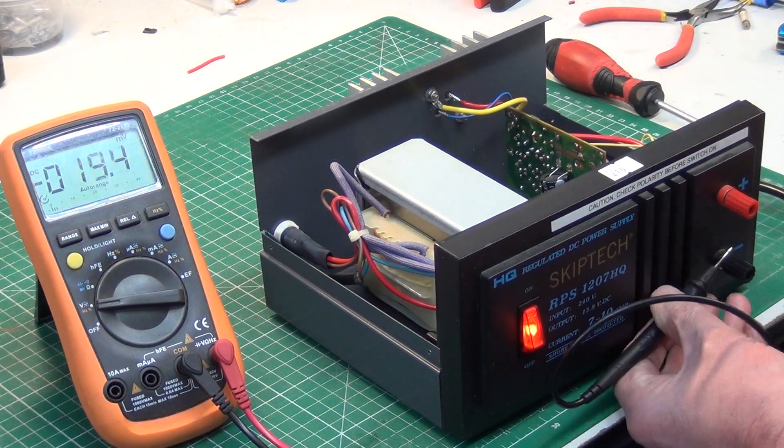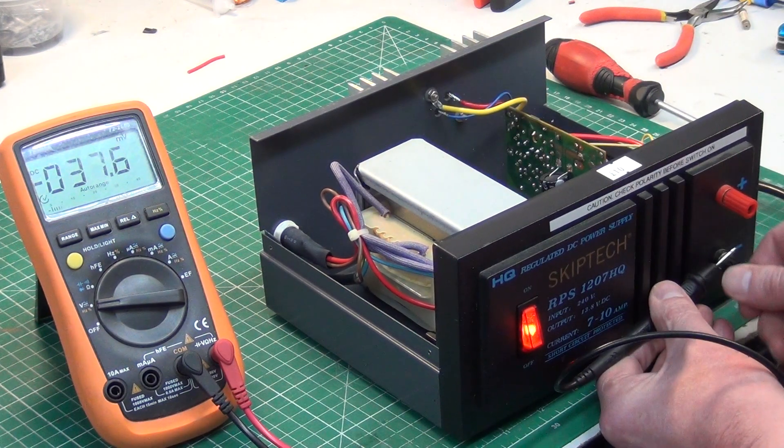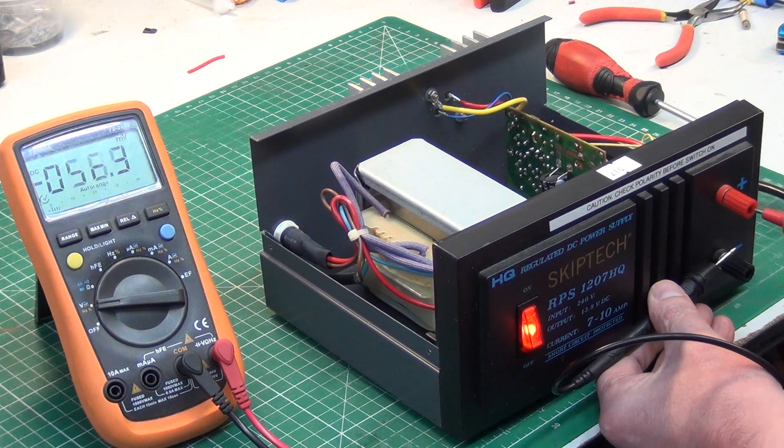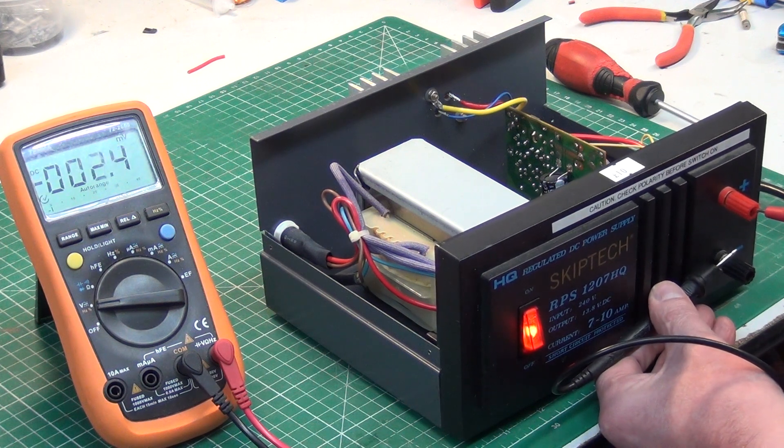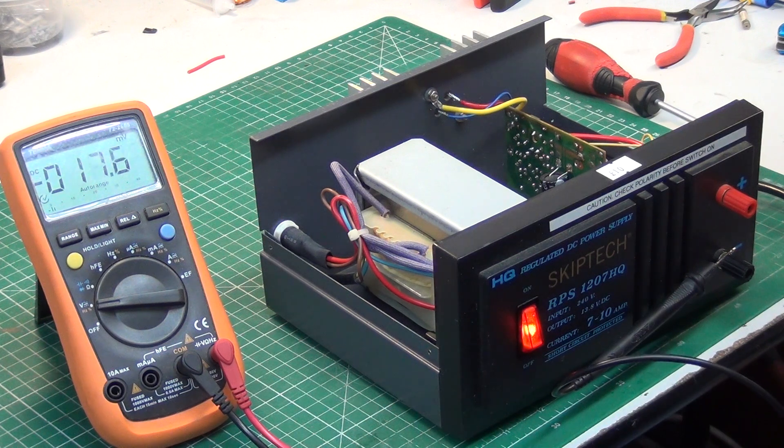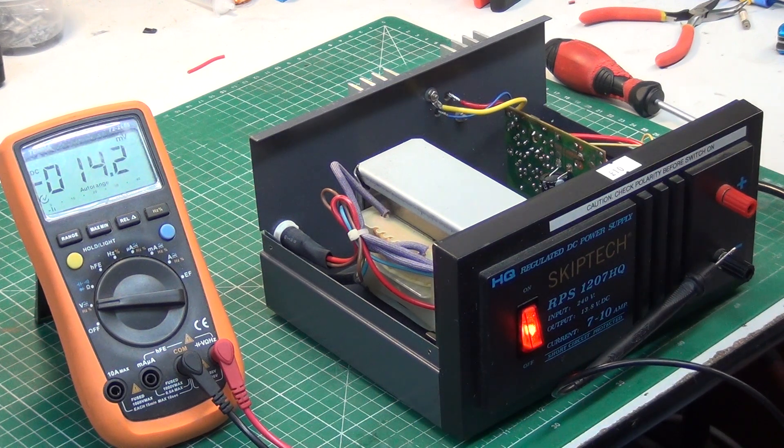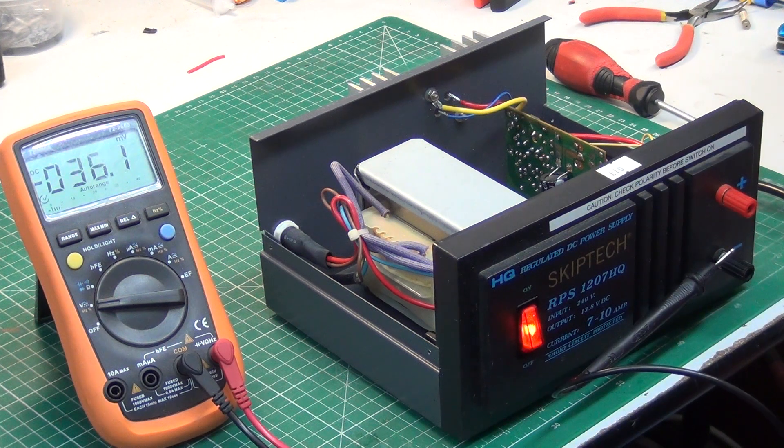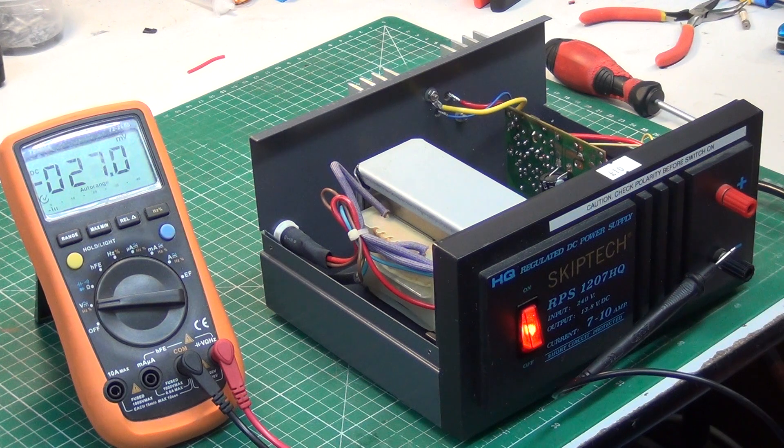Now that's to the bridge rectifier. So to the actual negative on the power supply, there's nothing. Is it possible that there's an over voltage protection and because the output transistor has gone short circuit it could be cutting it? Yes, probably.